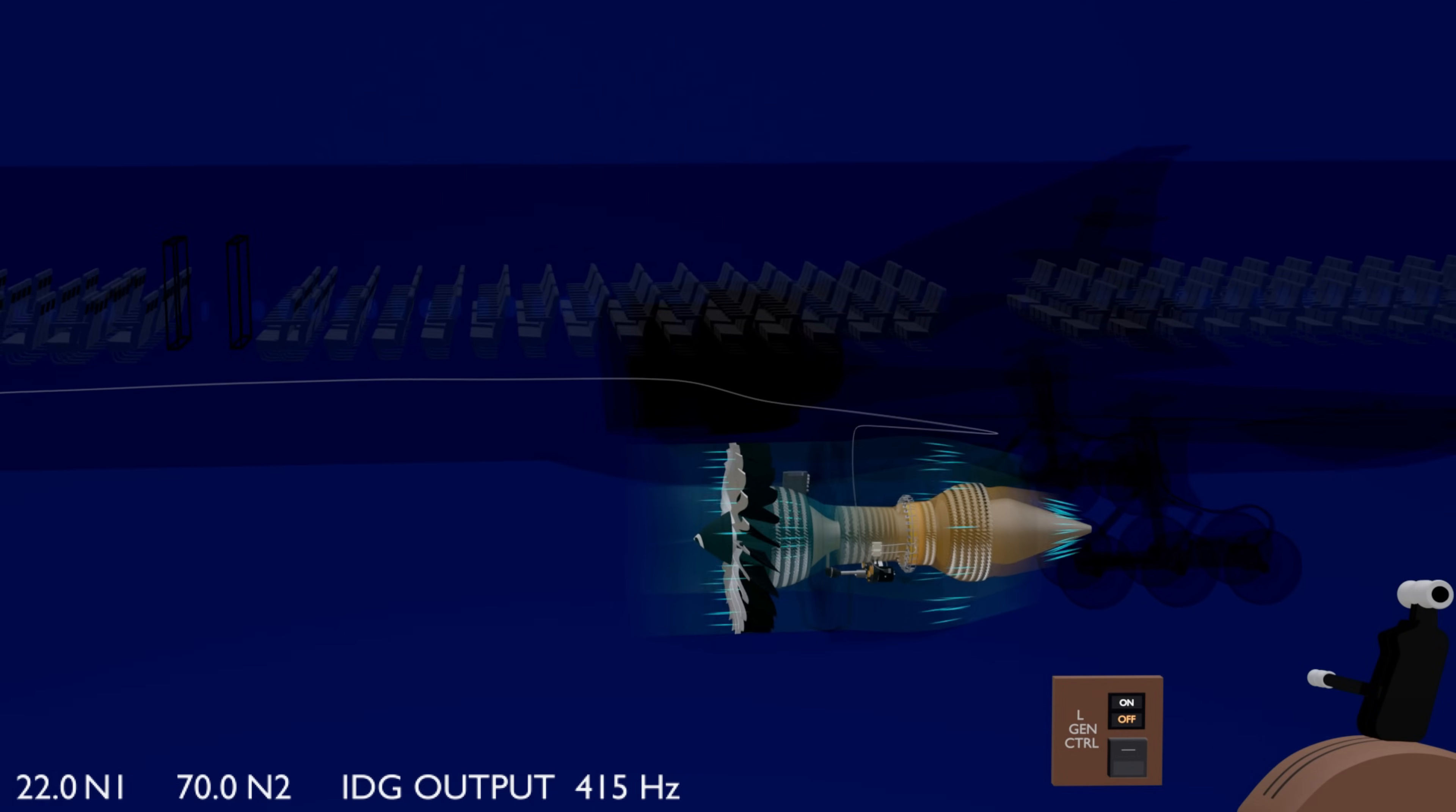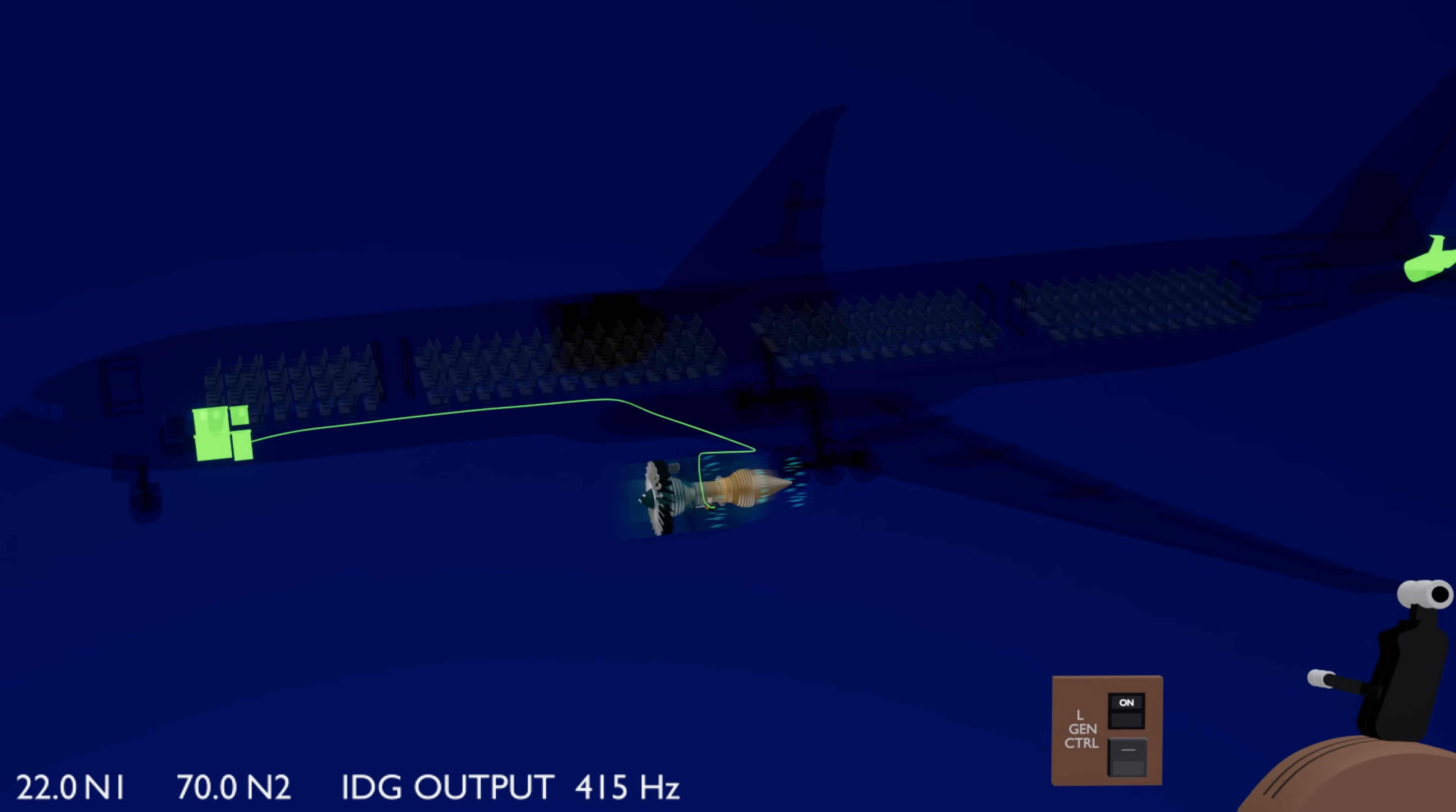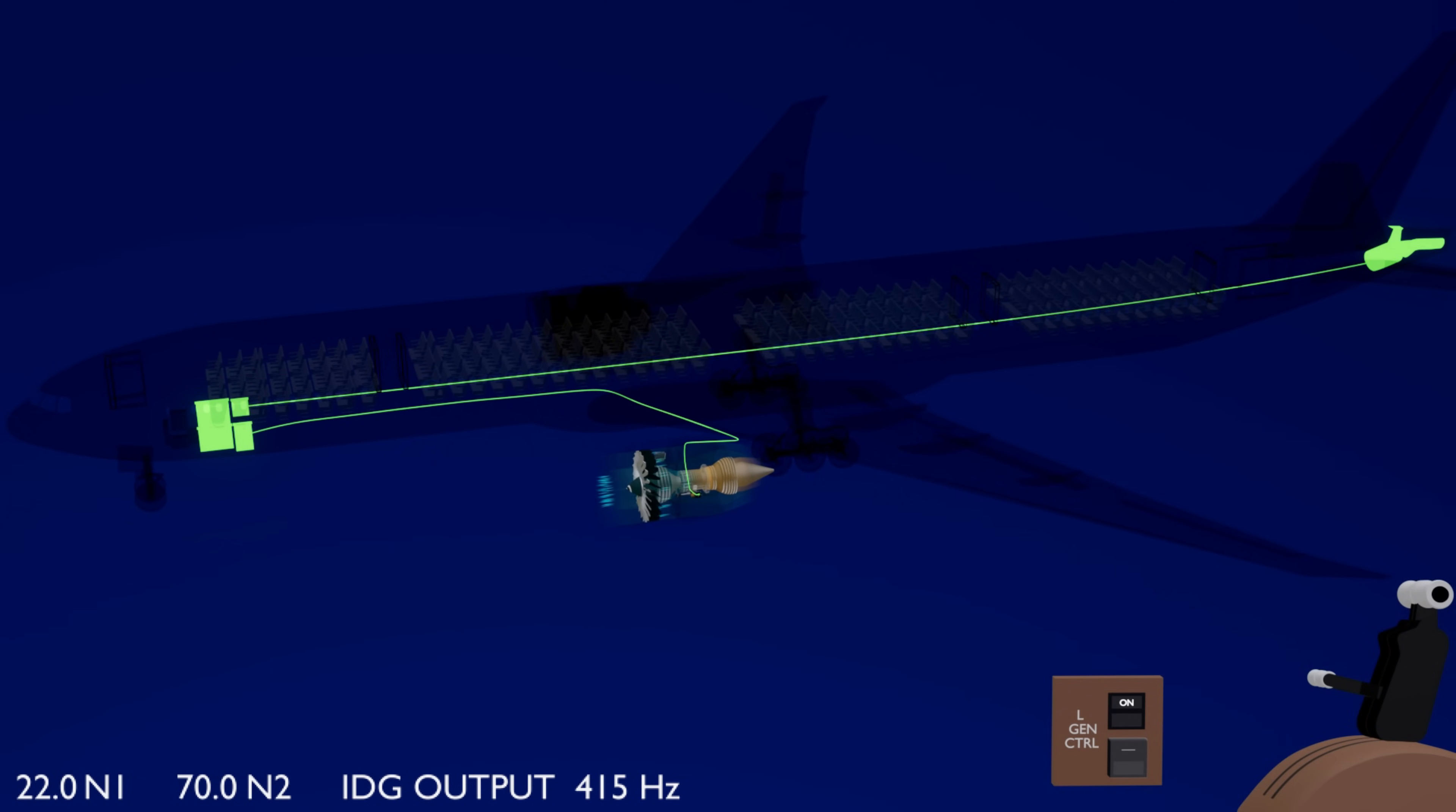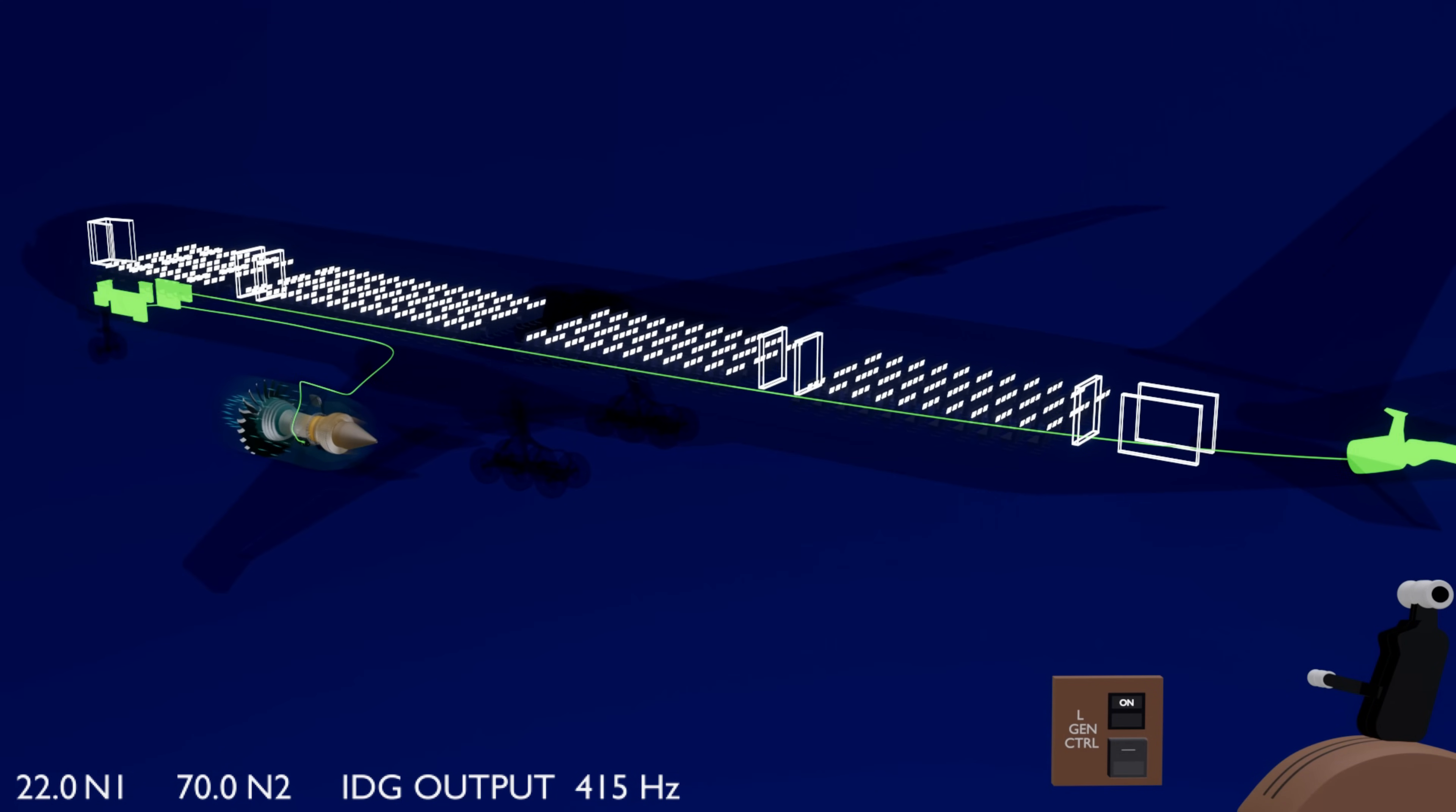Ensure the IDG breaker switch is on, and the IDG will automatically supply power to the left buses. The APU generator supplies only to the right buses. The load management system, now with two sources of power, stops shedding the non-essential loads. The galley equipment and entertainment systems are now available for use.